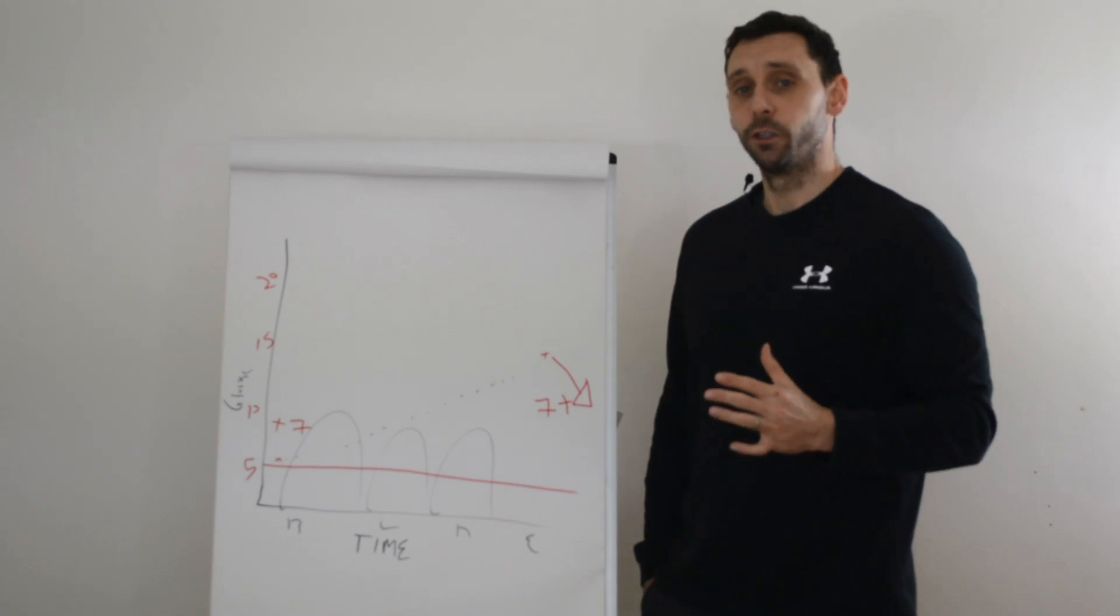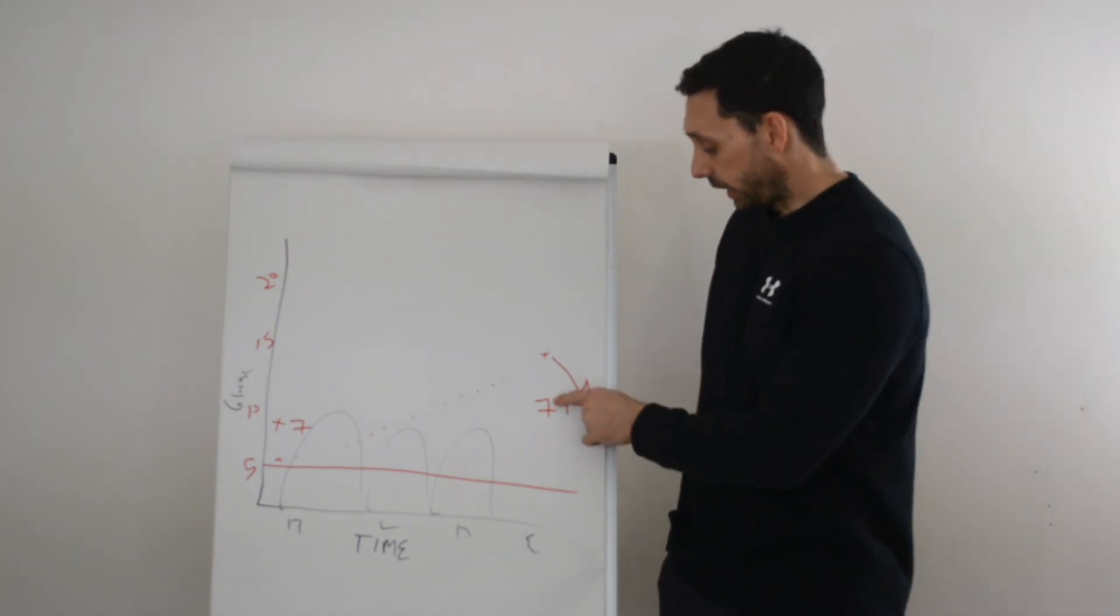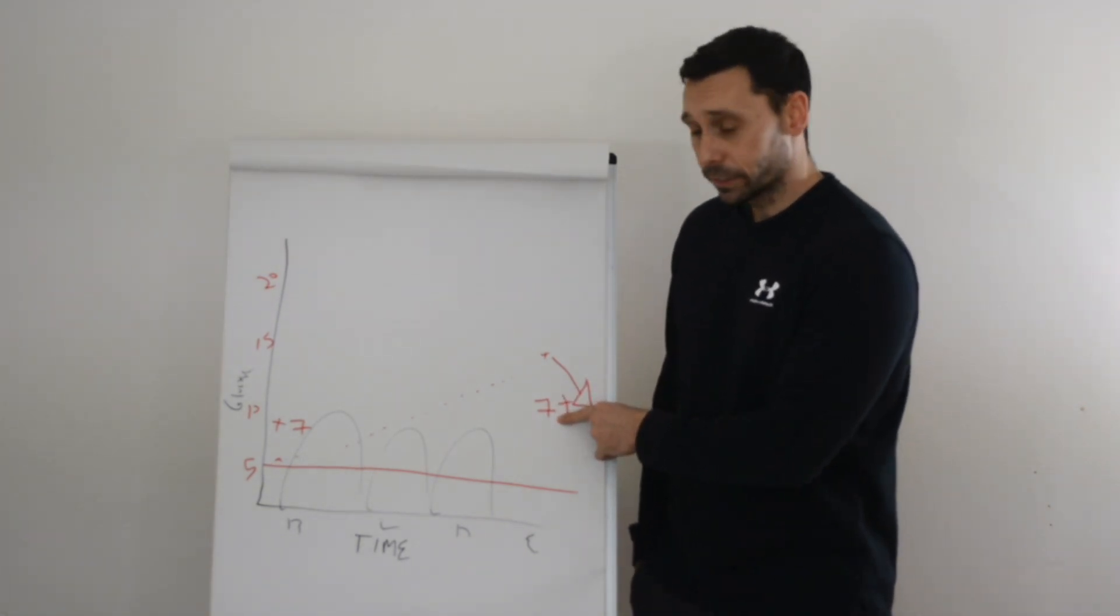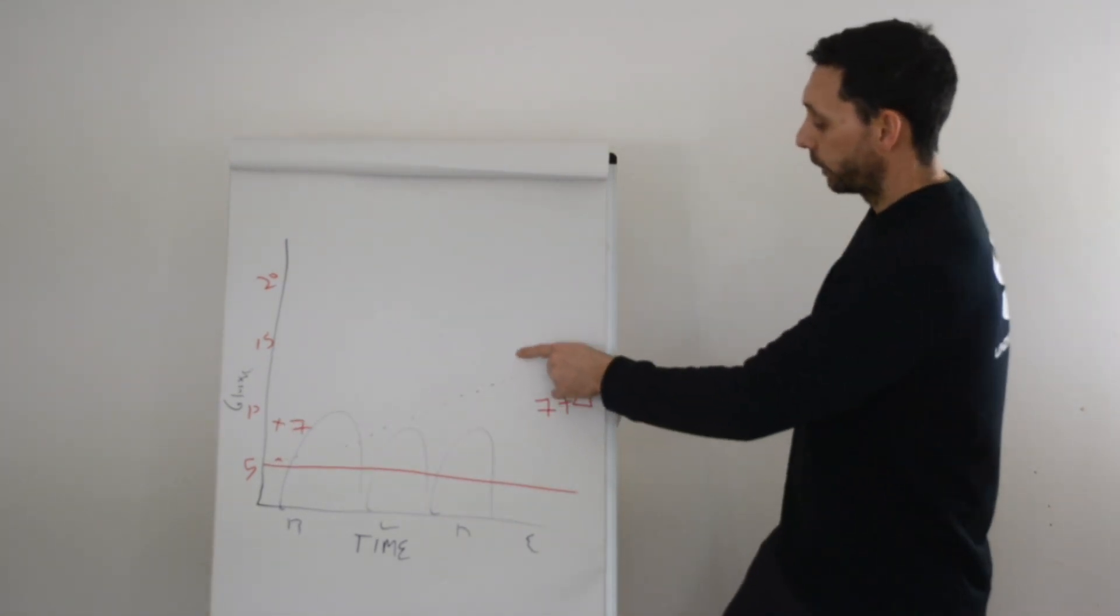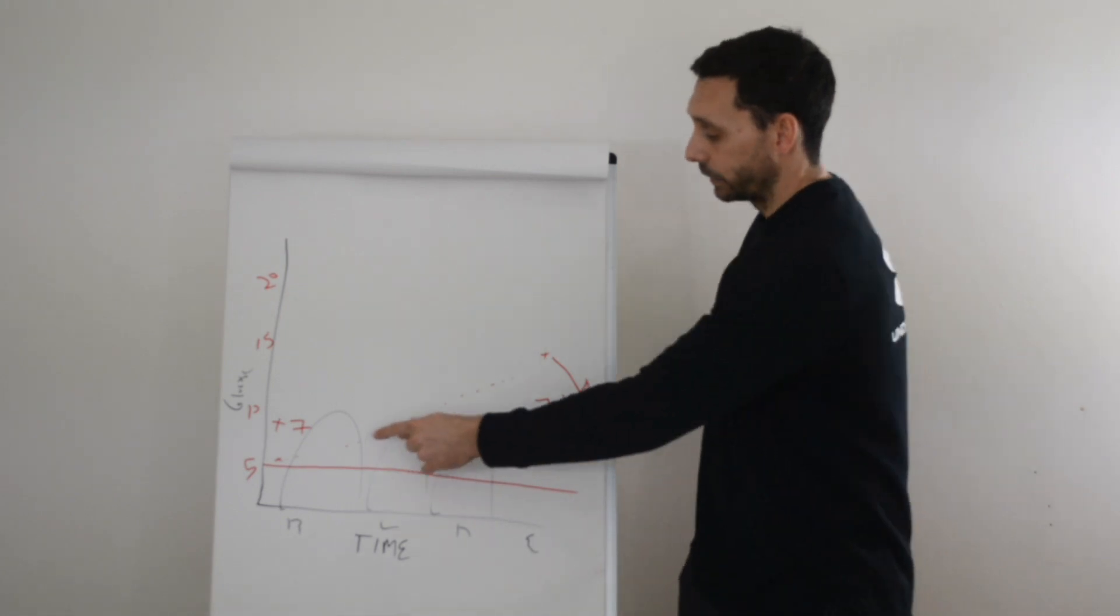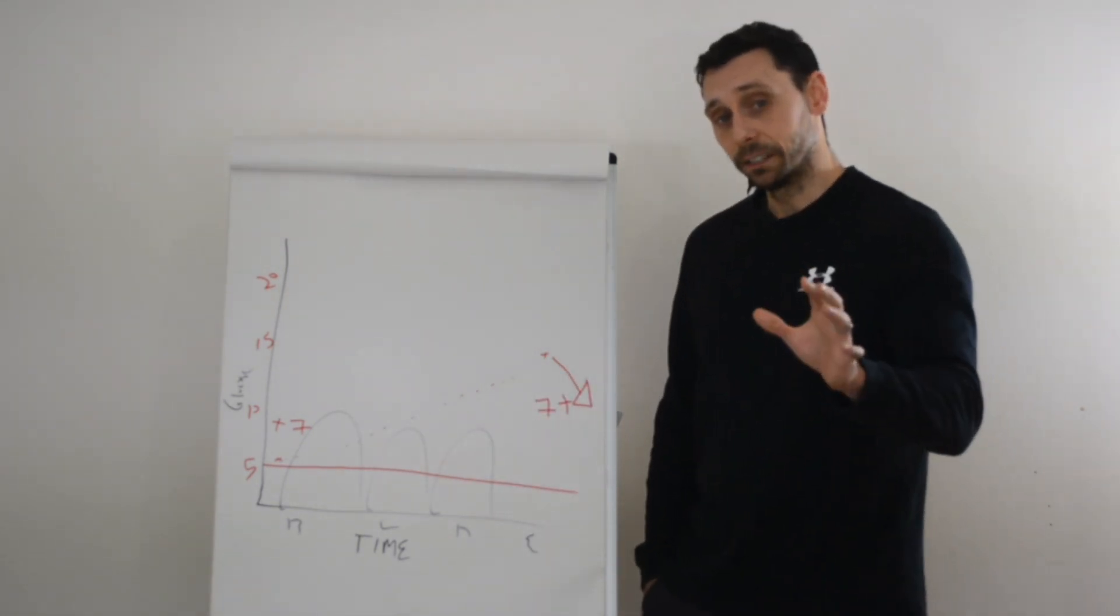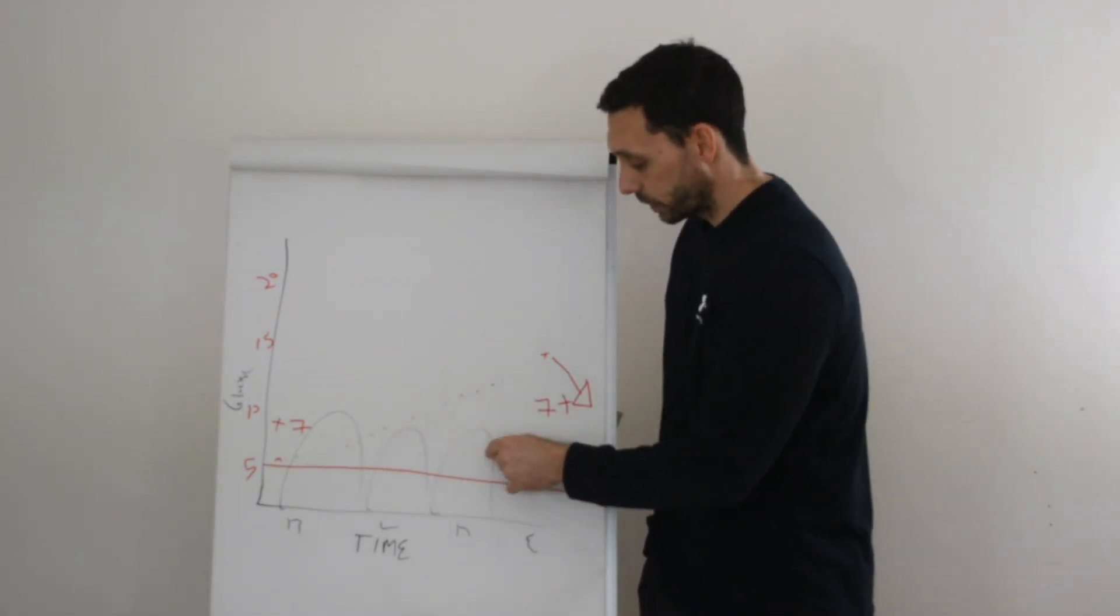So a quick way to test if your basal insulin is right is can you go to bed with a glucose level of seven and wake up with a glucose level of seven? If you're getting high glucose levels before bed and you're on a basal bolus regimen, the problem isn't basal, it's one of these doses in here.